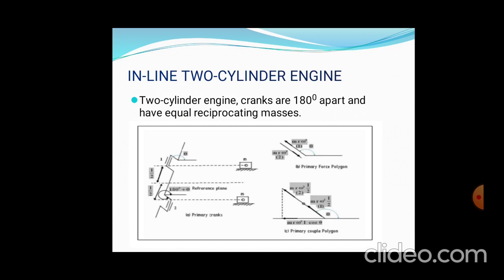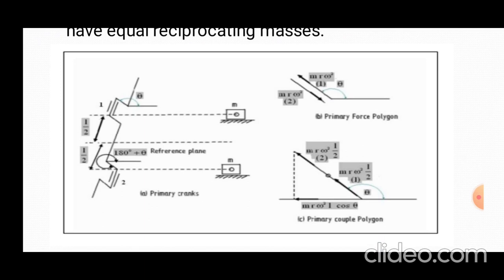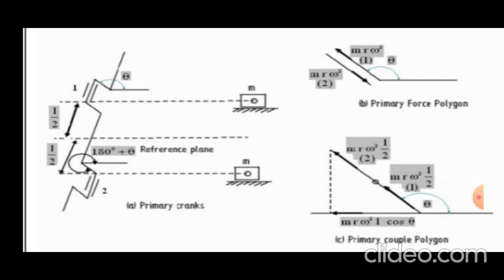In a two-cylinder inline engine, the two cranks are 180 degrees apart and have equal rotating masses. With two masses having a 180-degree phase difference, the primary angle for one crank is θ and for the other is 180°+θ. The two masses are equal but opposite in direction, and we can draw the primary polygon for this arrangement.